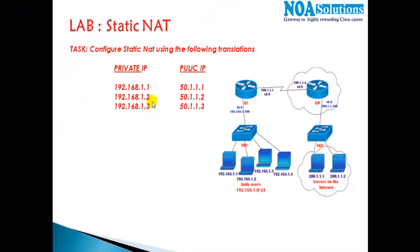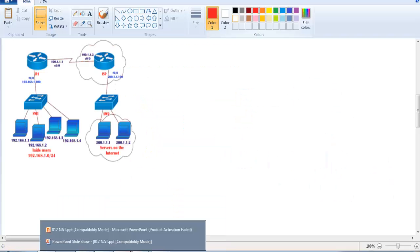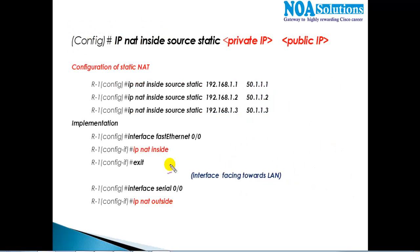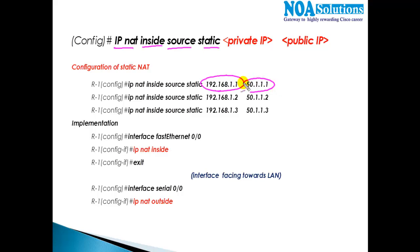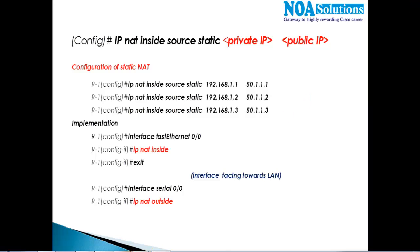The requirement is that 192.168.1.1 should go out as 51.1.1.1. The static NAT configuration is straightforward: 'ip nat inside source static 192.168.1.1 51.1.1.1'. Similarly, 1.2 maps to 51.1.1.2, and 1.3 maps to 51.1.1.3. If you have 100 users, you need to write 100 lines manually — that's how static NAT configuration works.